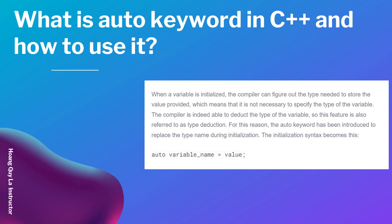The syntax is like this: auto variable_name = value. For example, auto i = 3.